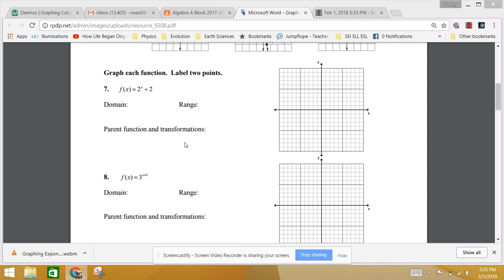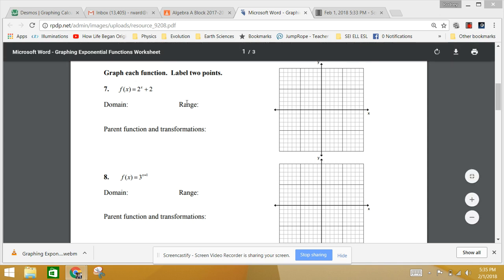I'm going to do another video about graphing exponential functions with transformations. This time we're going to deal with transformations that go right and left, and transformations that go up and down. We've got this function f(x) equals 2 to the x plus 2, and it's asking us for a domain, range, and it wants to know what the parent function is and the transformations.